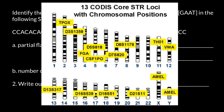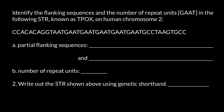Let's return to our problem. Here is the sequence, and we know the core sequence which is GAAT. Now we can find how many times this tetranucleotide repeats. Starting from here, we can identify: GAAT, GAAT, GAAT, GAAT, and GAAT.